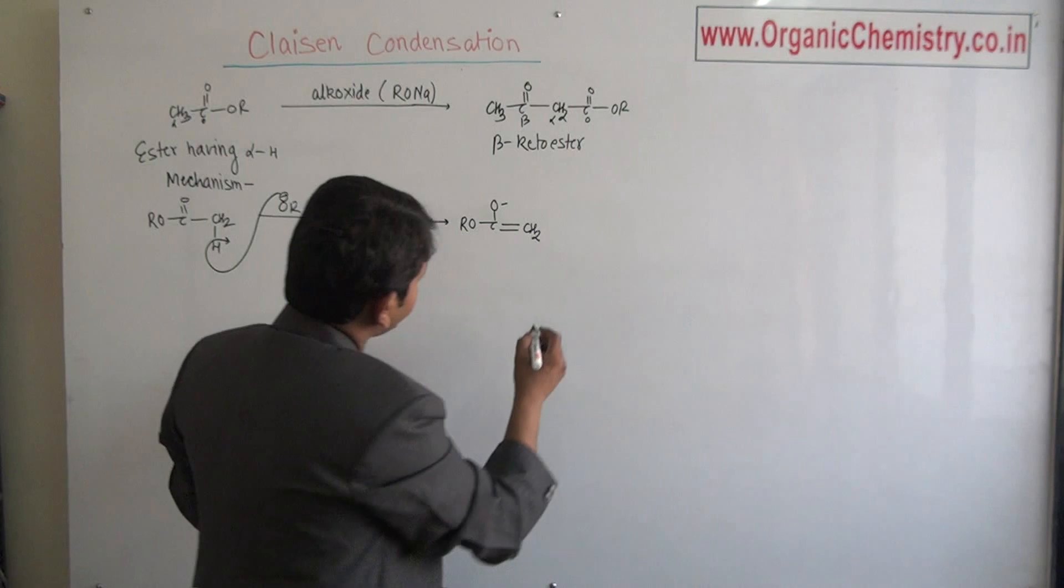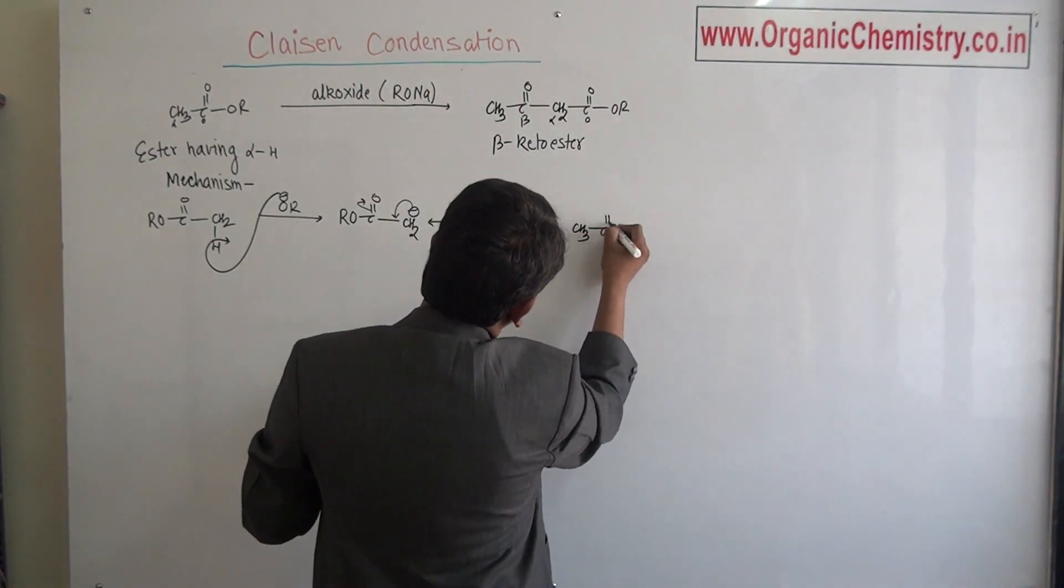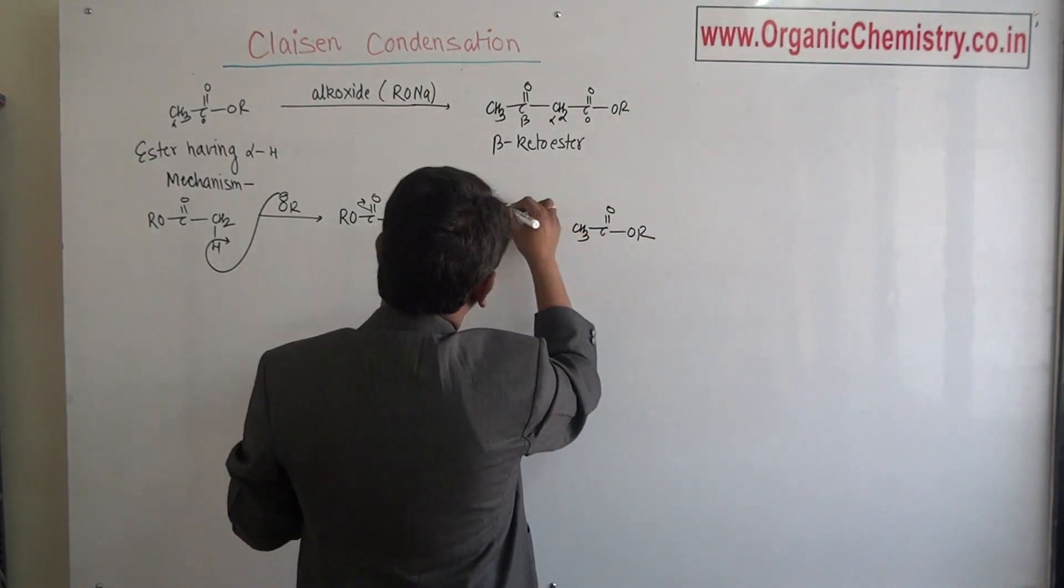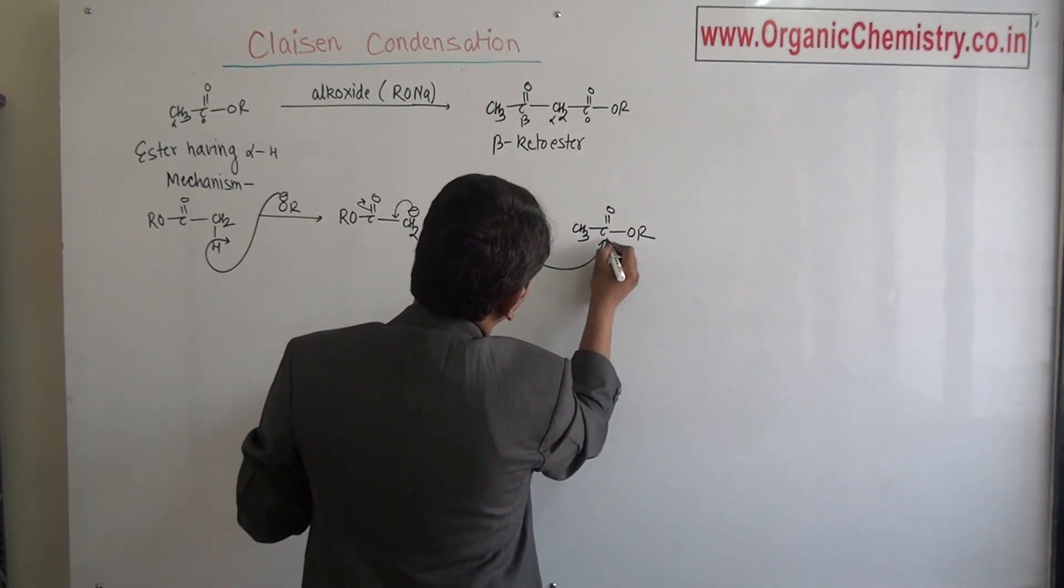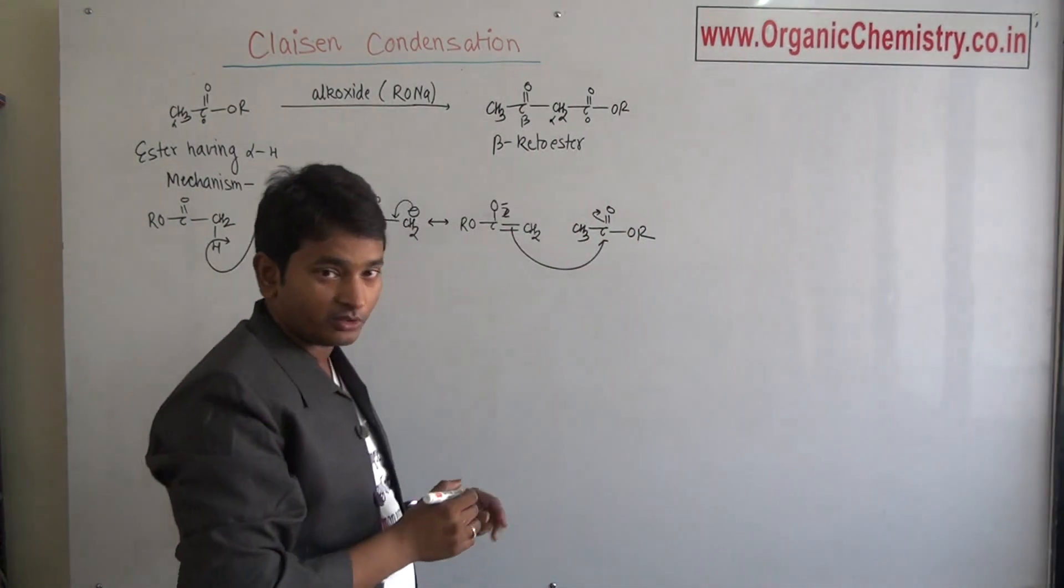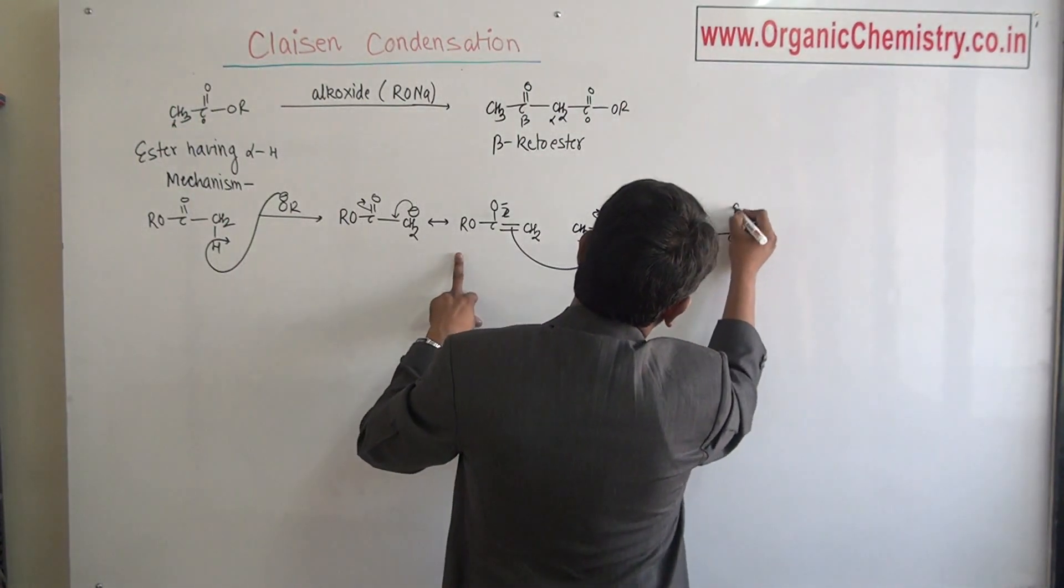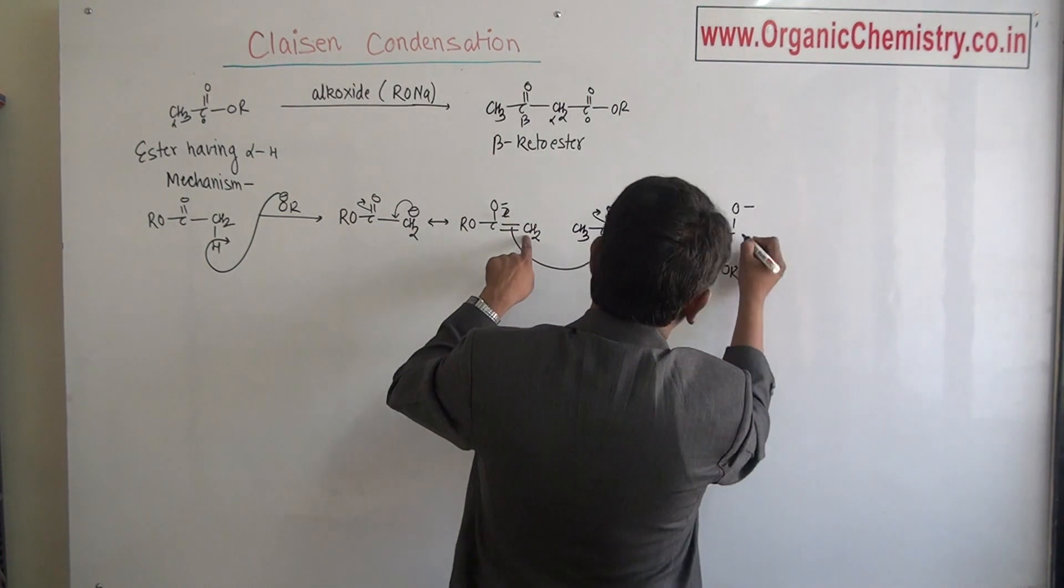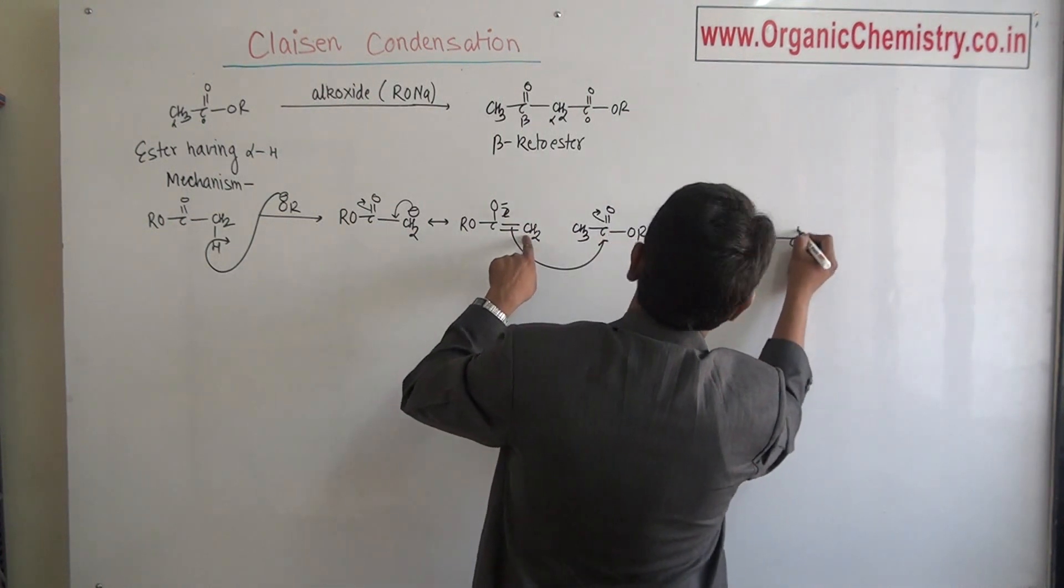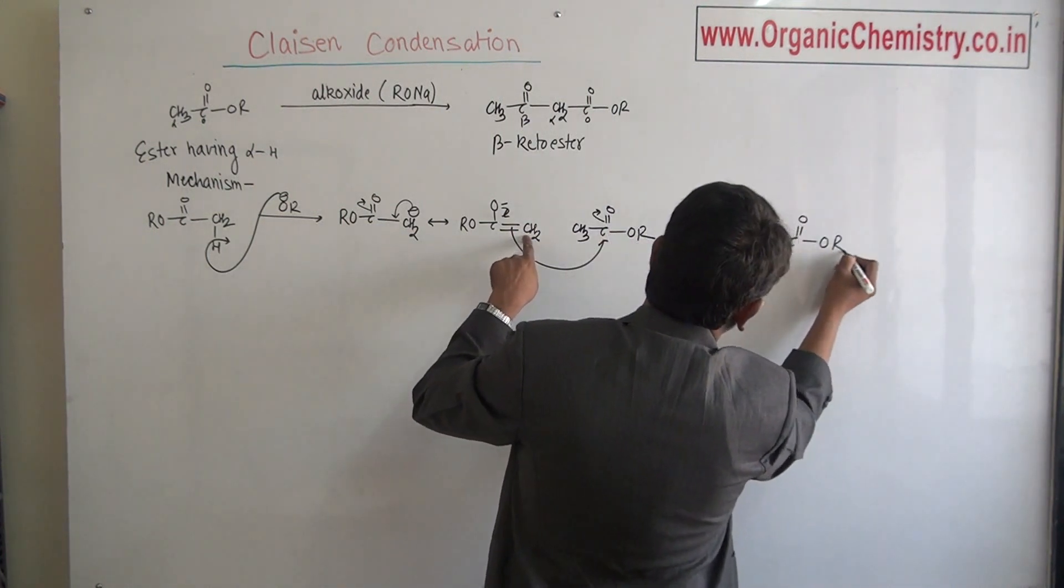This enolate ion attacks over another ester group. Breaks this pi bond. Form CH3-C-O negative OR and attach with CH2-C-O O-R.